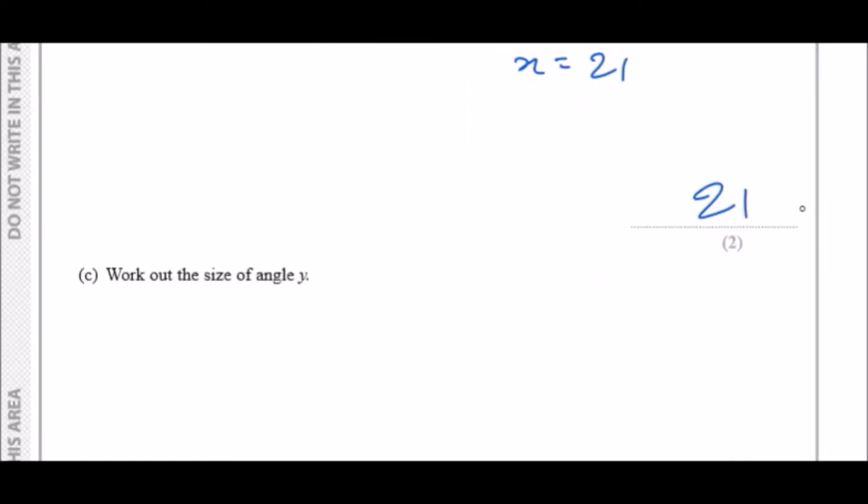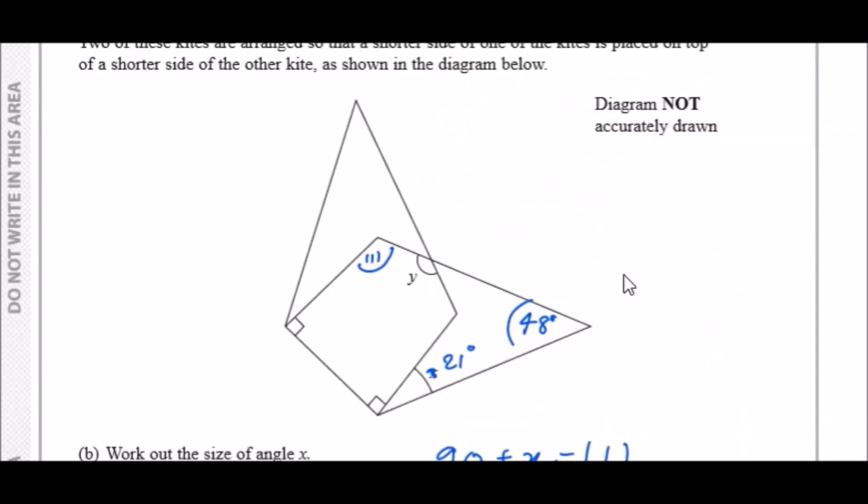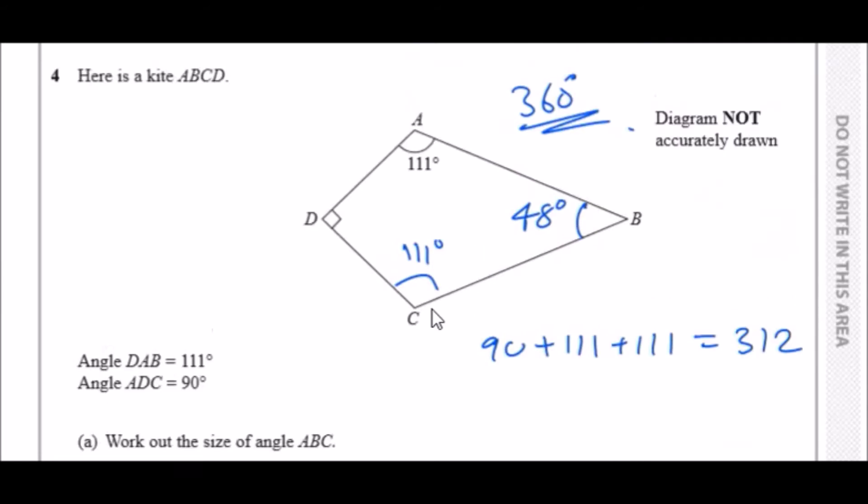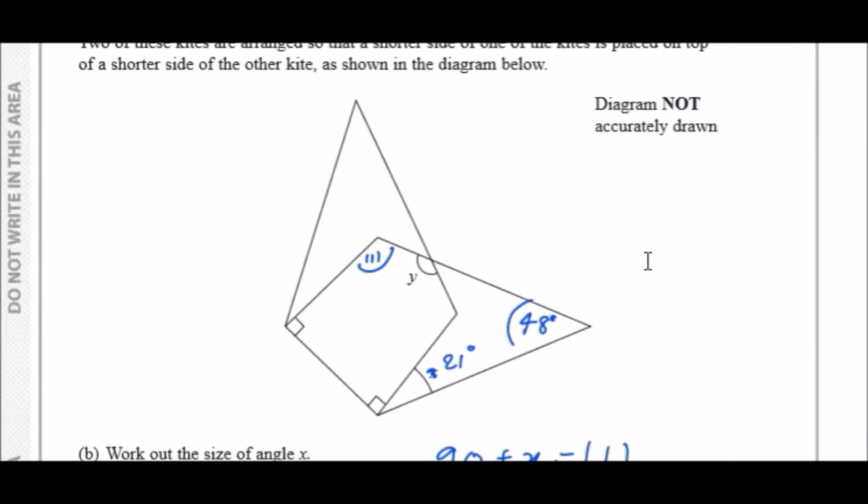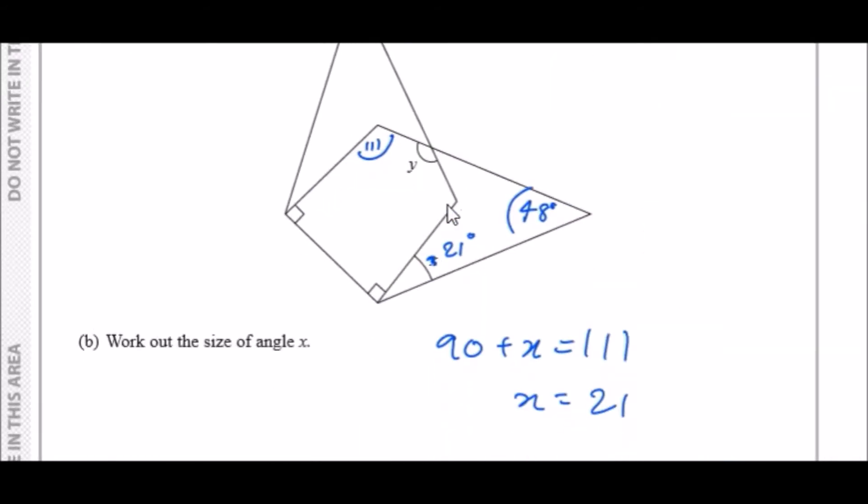Work out the size of y. We need to figure out what this one is. We should know the value of this angle here, I believe we have it previously, right? 111. Because it's just been rotated, it's still the same size. So this angle must also be 111.